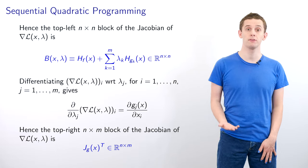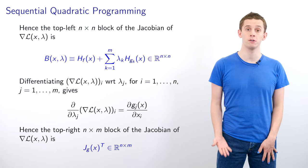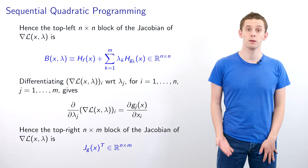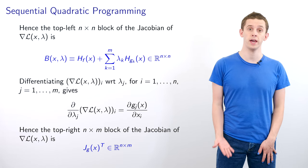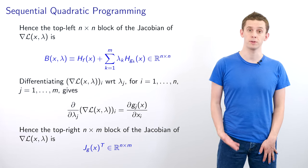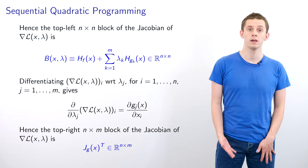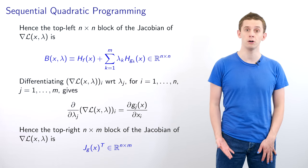Hence the top left n×n block of the gradient of L is given by the Hessian of f plus the sum from k=1 to m of λ_k times the Hessian of g_k. We define this to be B(x, λ).